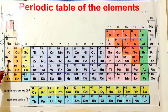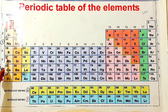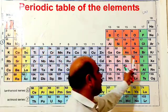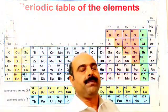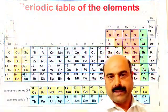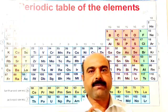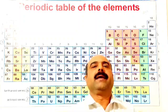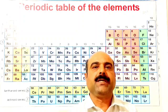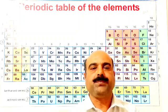Period number 5 starts from rubidium atomic number 37 and ends on xenon atomic number 54. These are also total 18 elements. The sixth period and the seventh period contain 32 elements each and these are called the longest periods of the periodic table.